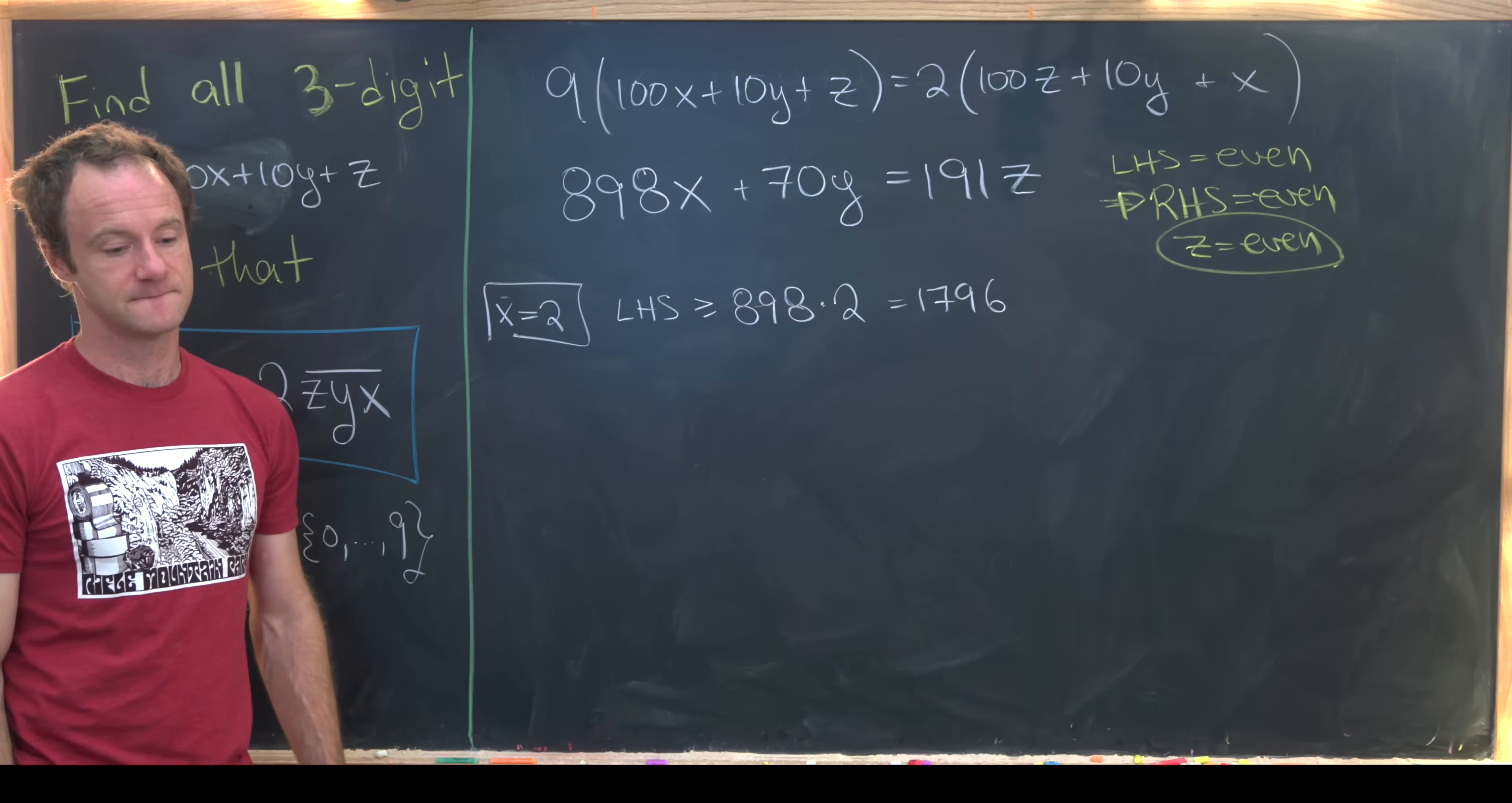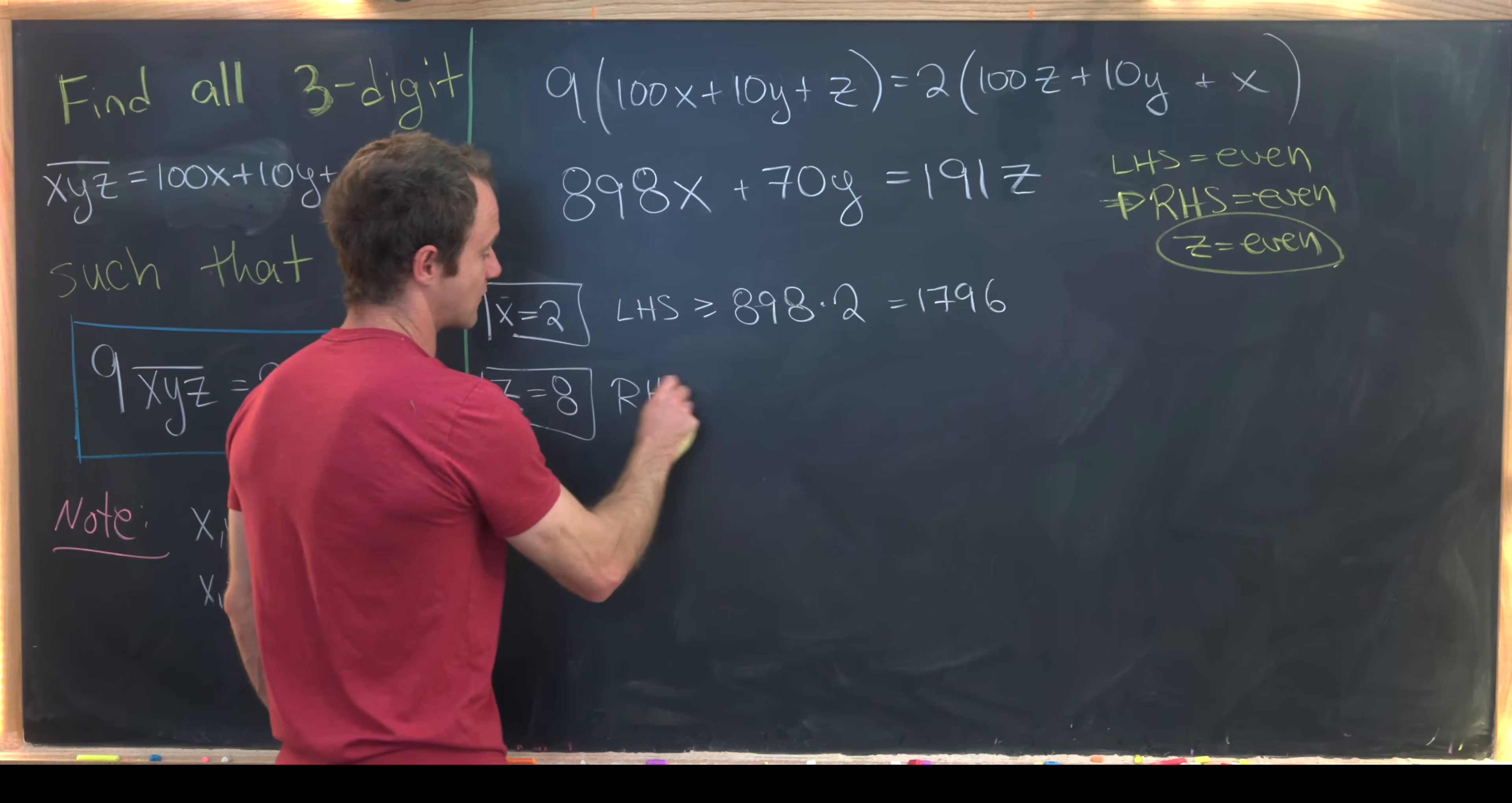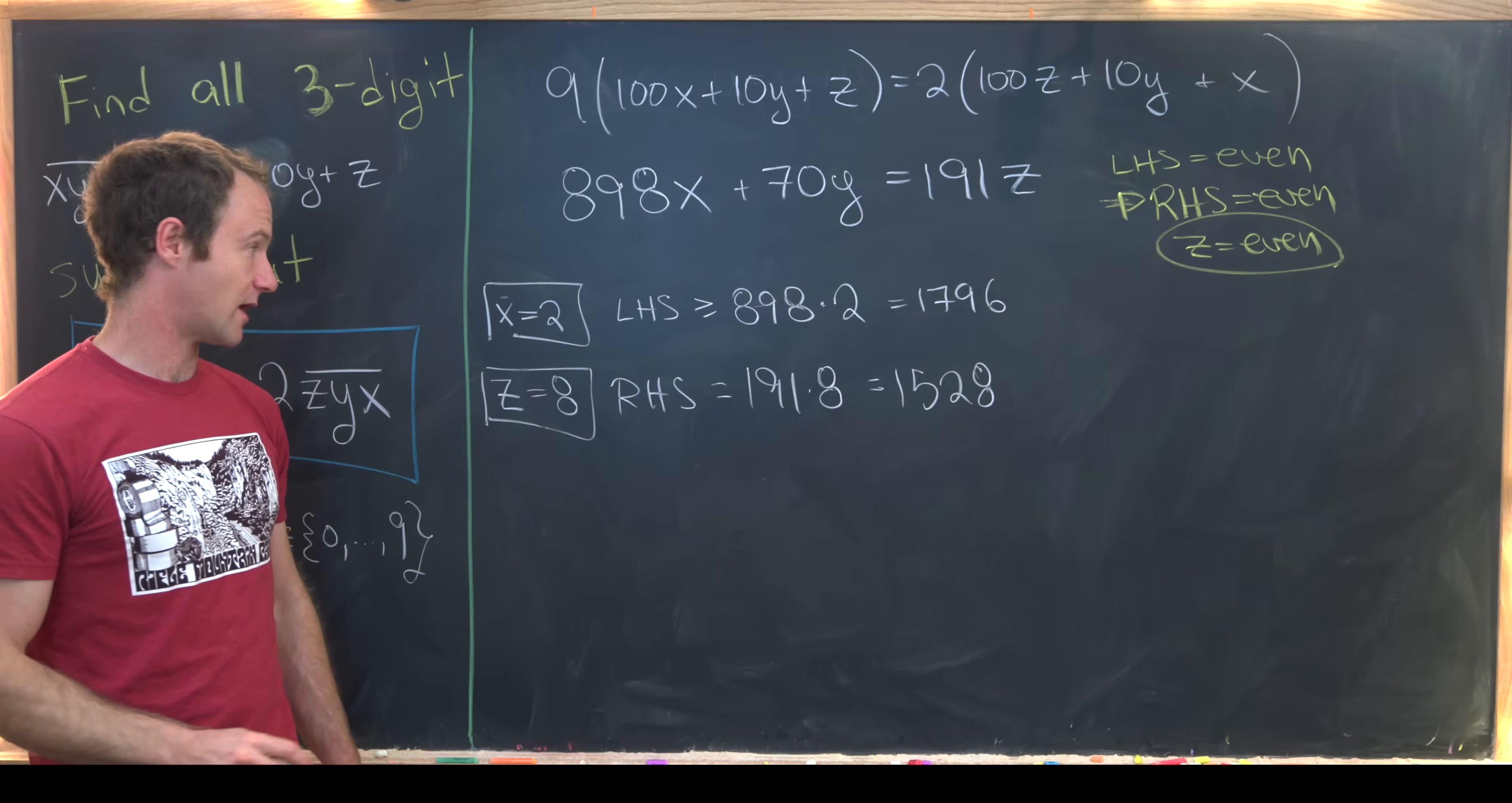Okay and now let's notice that since z is even the largest z can be is 8. So let's see what happens if z is equal to 8. That makes the right hand side exactly equal to 191 times 8. But we can calculate that out real quick and see that we have 1528. But notice that's a problem.